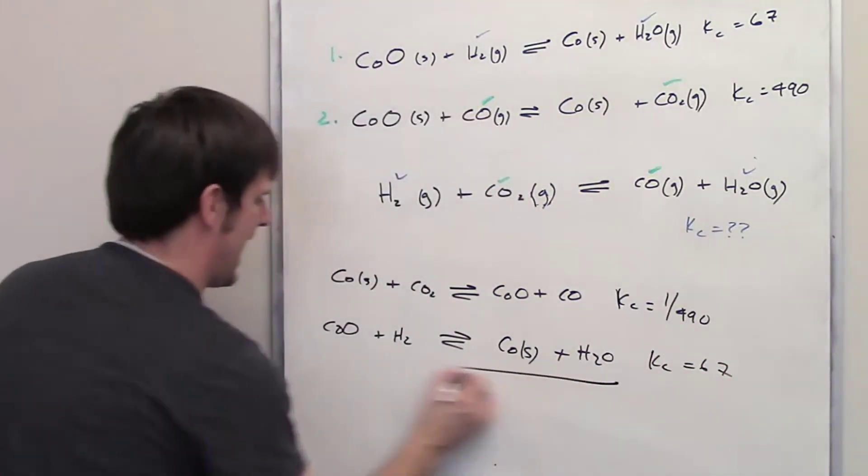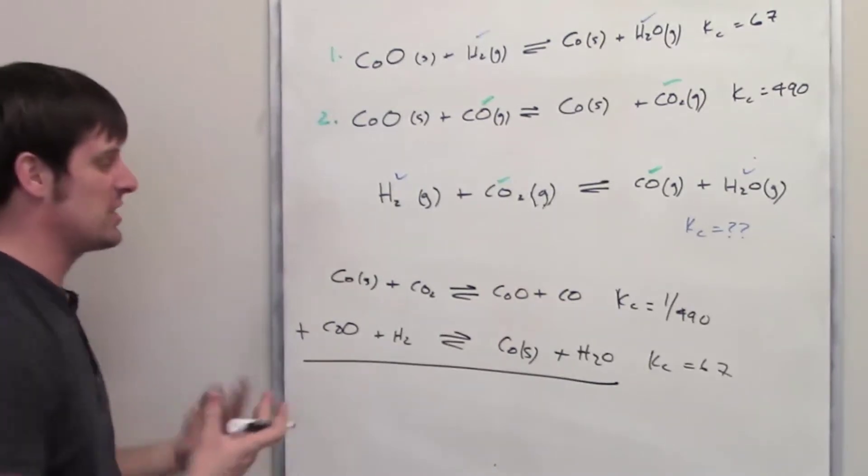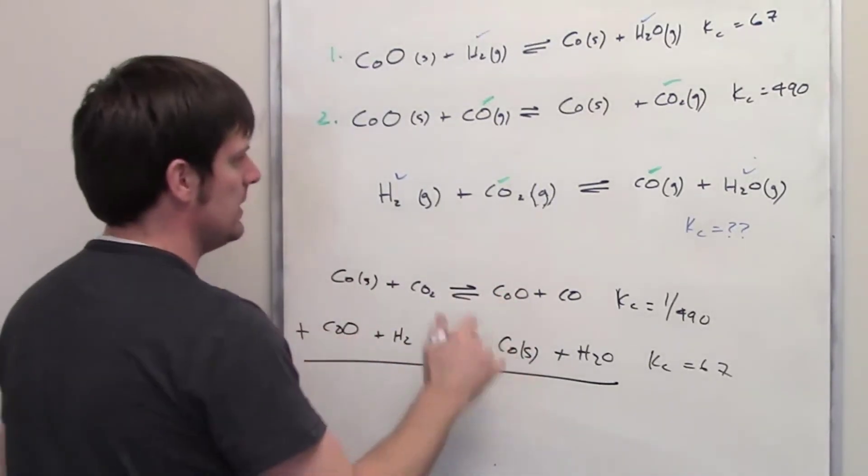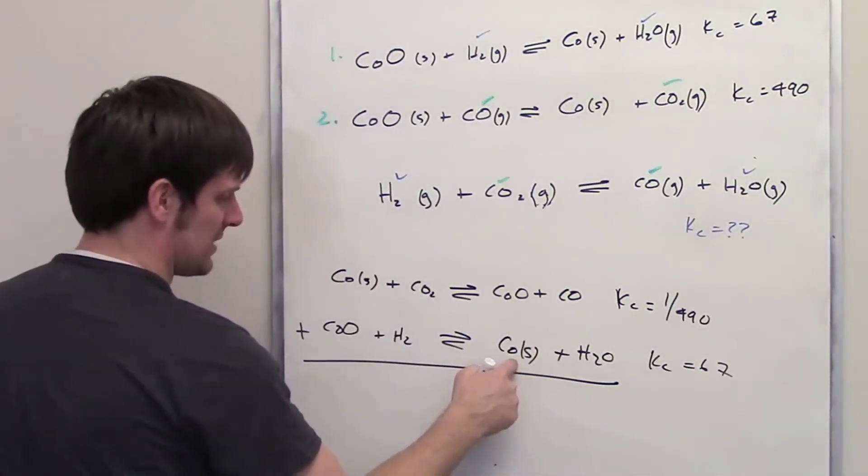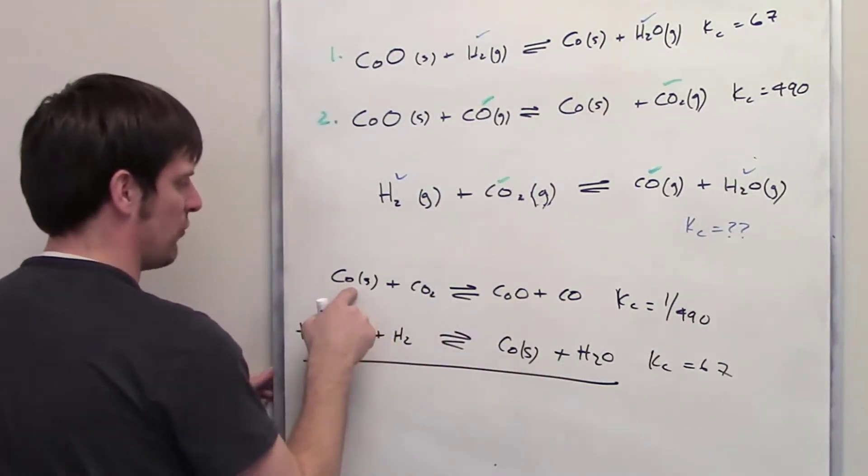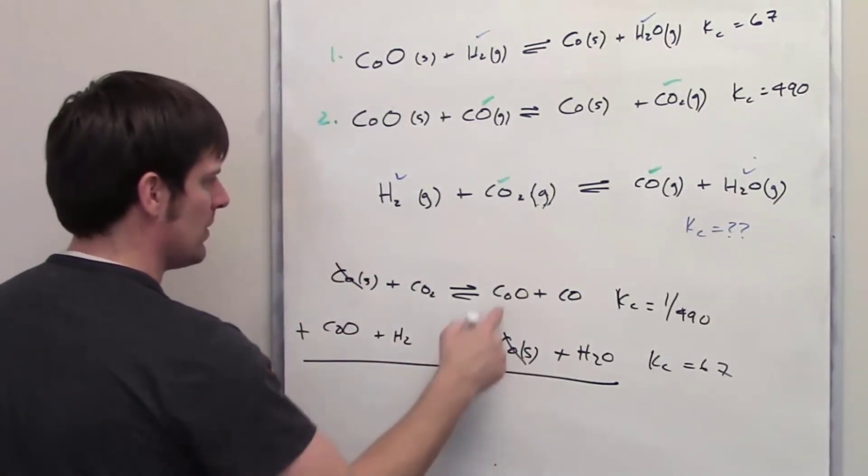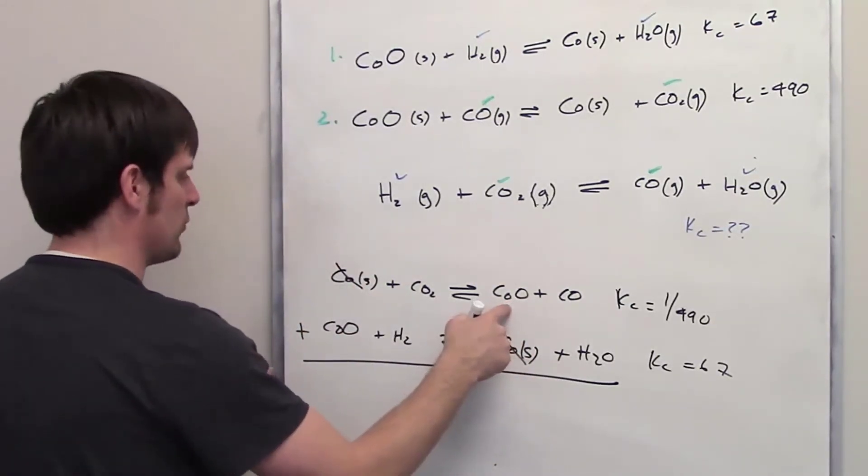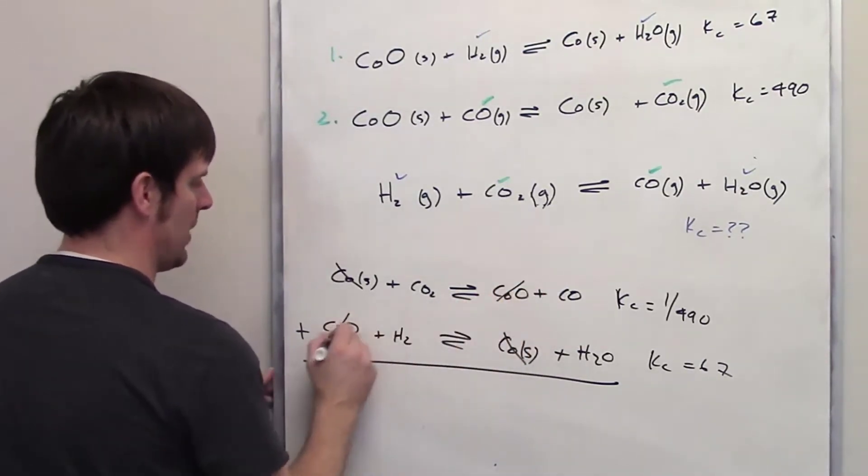What I'm going to do next is I'm going to add these two equations up and hopefully I will see some things canceling out. Hopefully when I'm all done, it will look exactly like this target equation here. Here we've got cobalt solid on the right side of the second equation. On the left side of the first, algebraically they cancel each other out. I've also got cobalt oxide on the right side of the first equation. On the left side of the second, they also cancel each other algebraically.